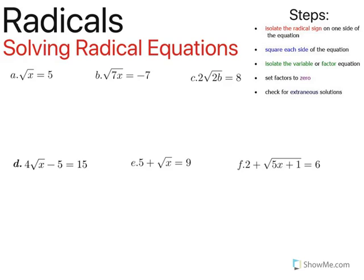To solve an equation like this, we're going to begin by isolating the radical sign to one side of the equation, getting everything else to the other side. Once we've done that, we're going to undo that radical sign by squaring both sides. Remember that the inverse of the square root is to square it.